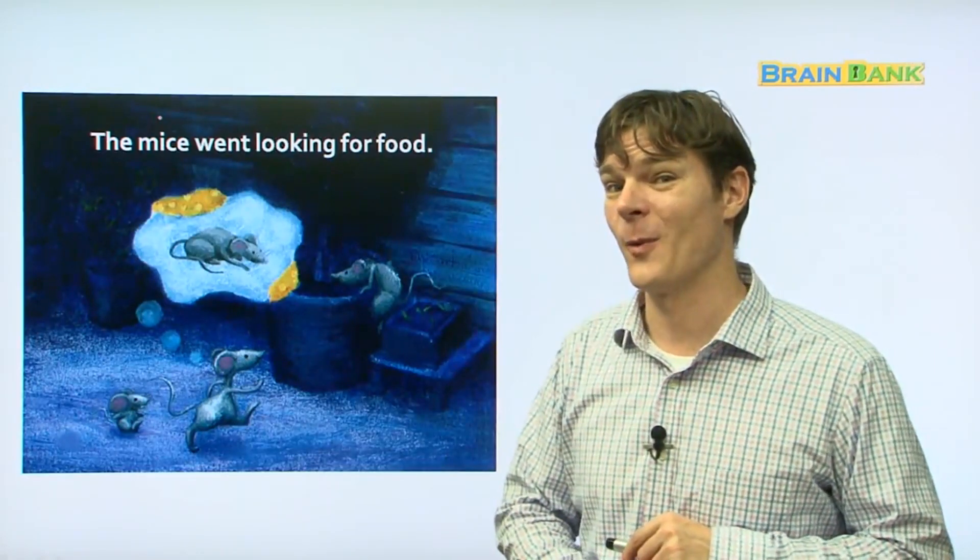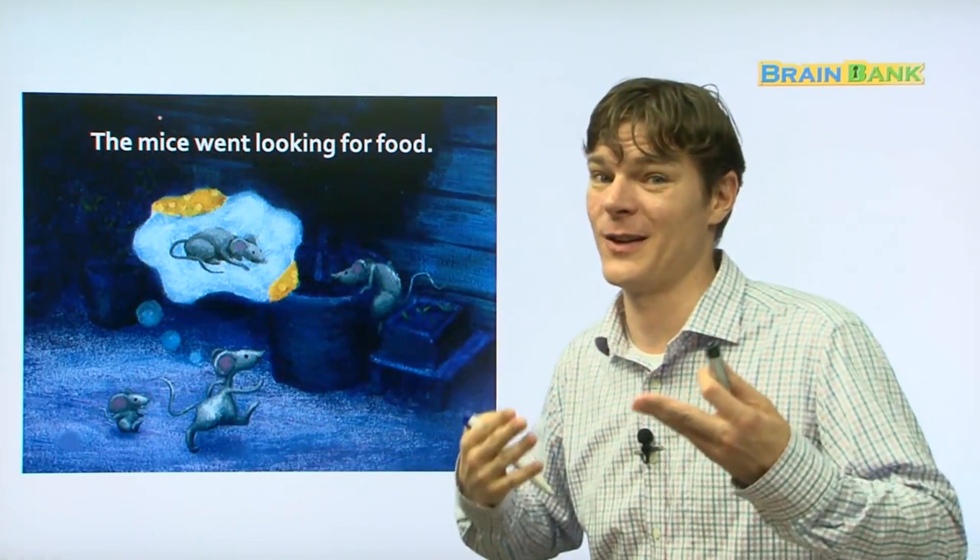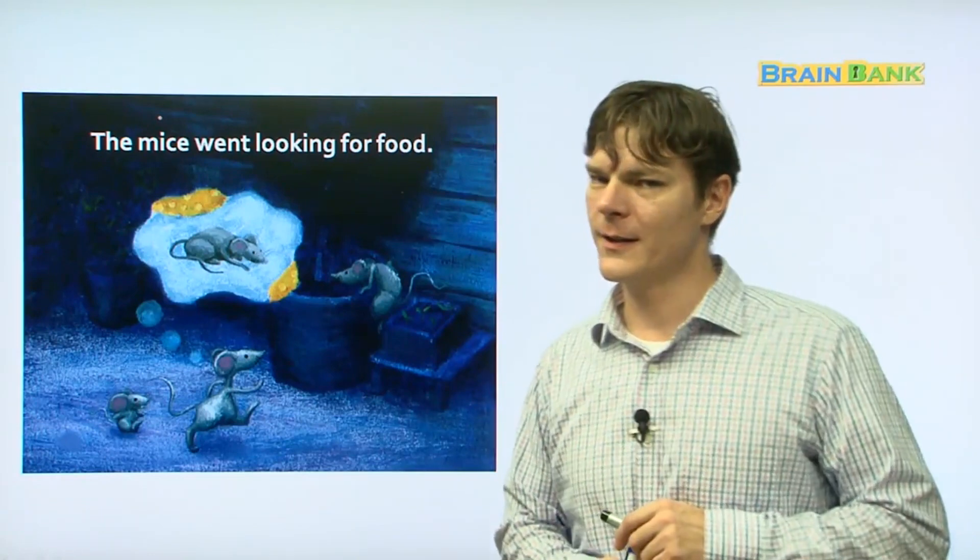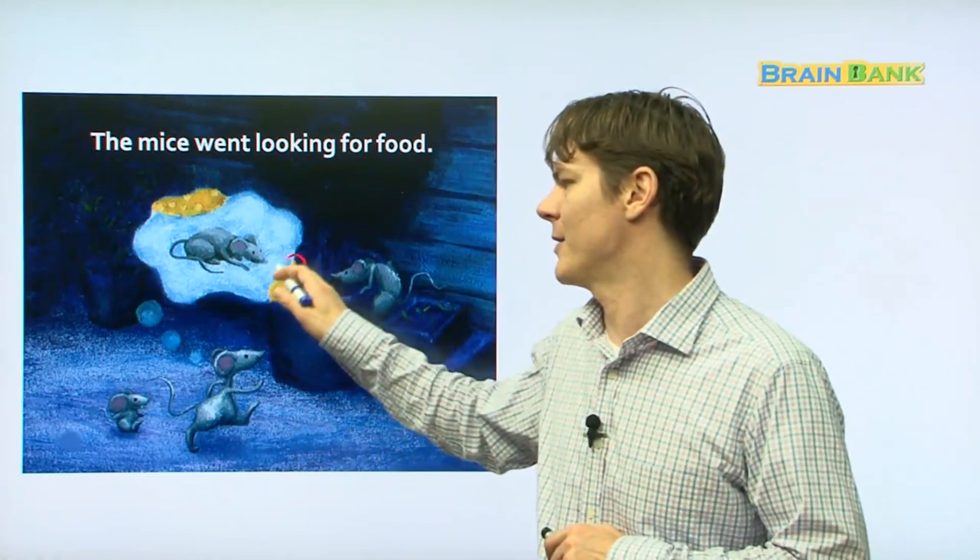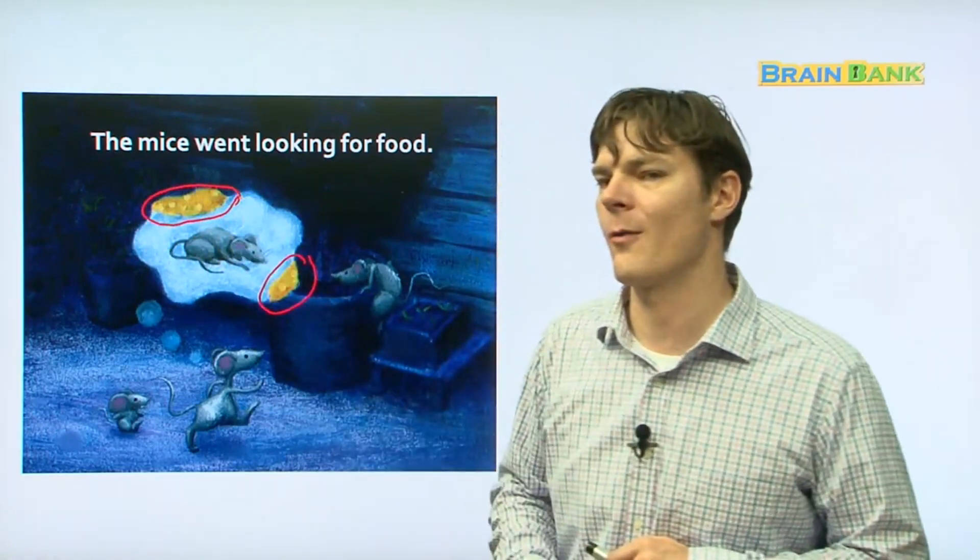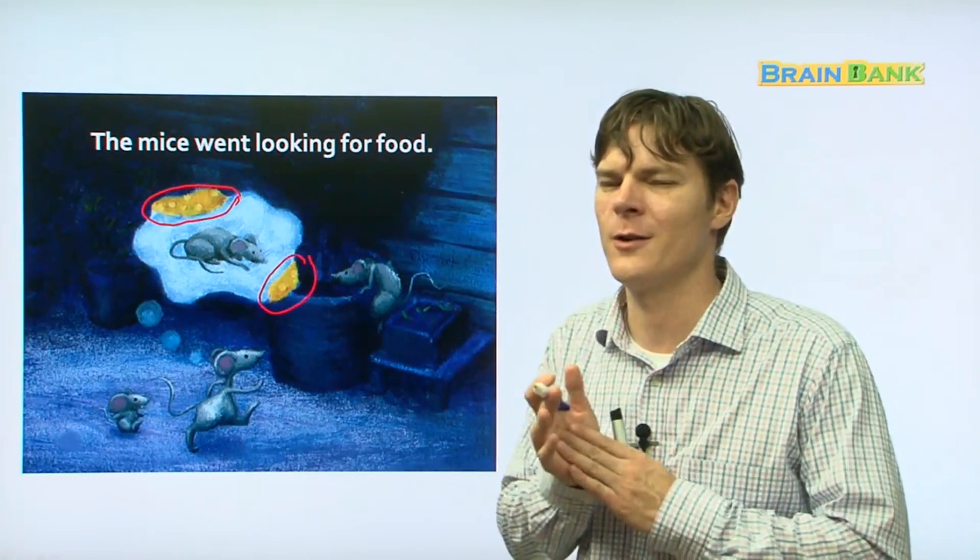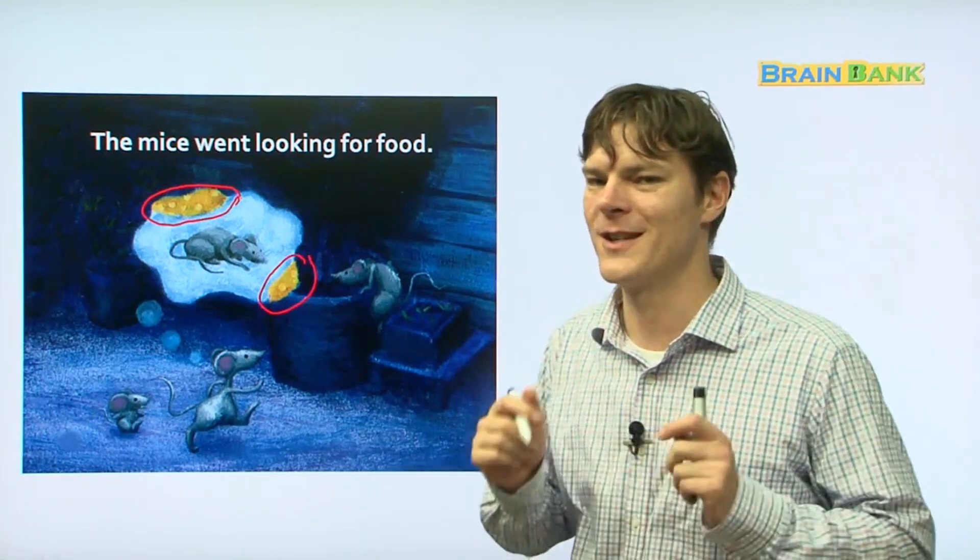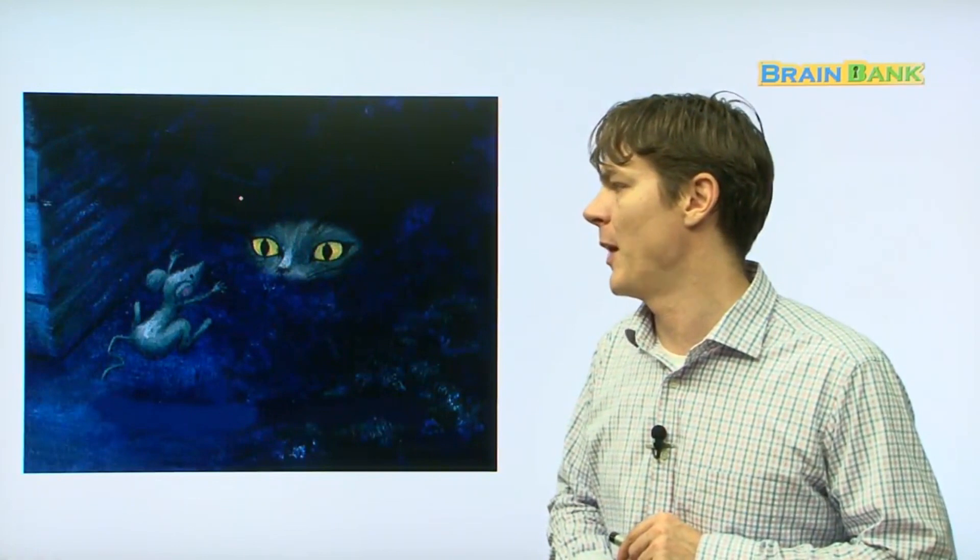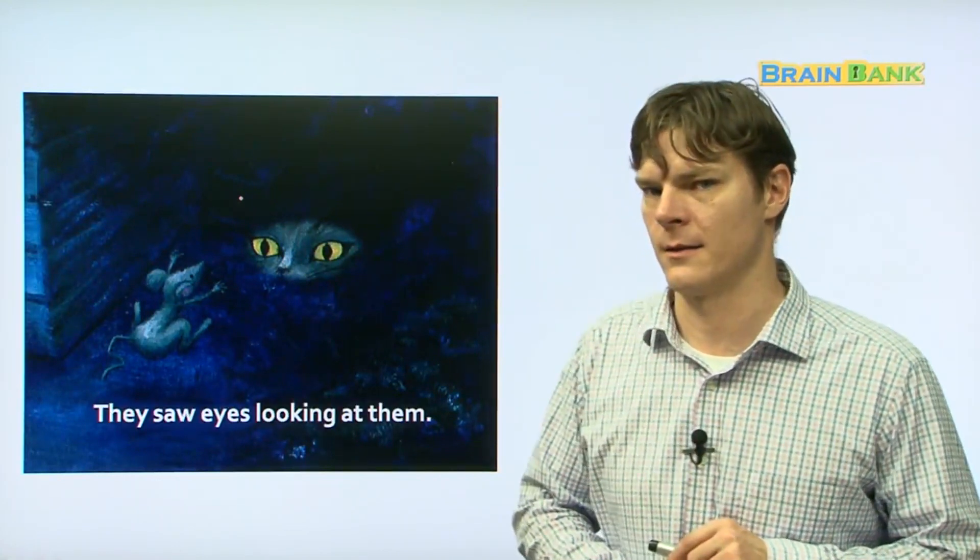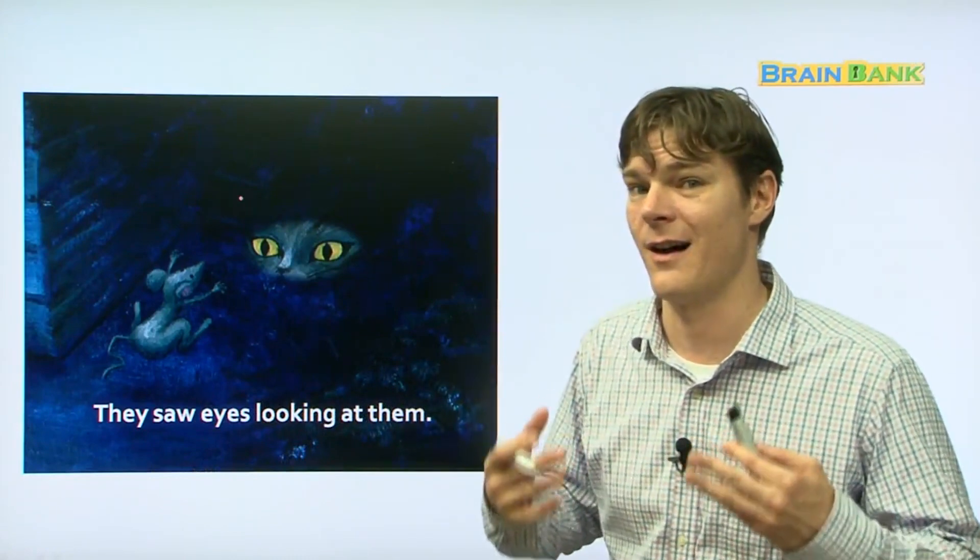Next, they went looking for food. The mice went looking for food. Now, this is kind of easy, probably. What kind of food are they looking for? Right here. Do you see what color it is? Two pieces. They're what color? Yellow. That's right. What do mice really like? Cheese. This is cheese. The mice are so hungry and they can't wait to get this cheese. But they saw eyes looking at them.